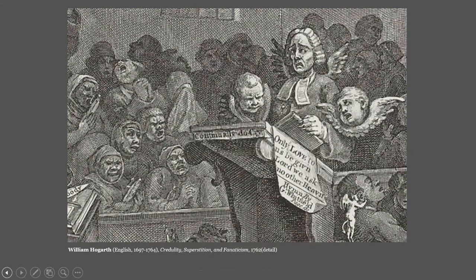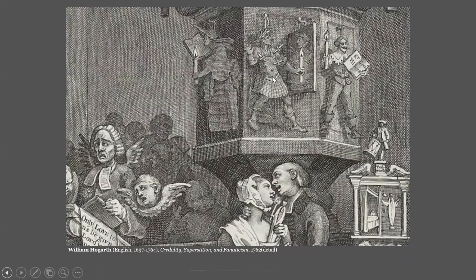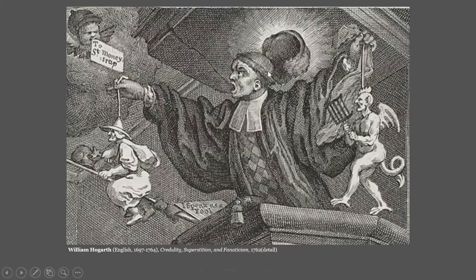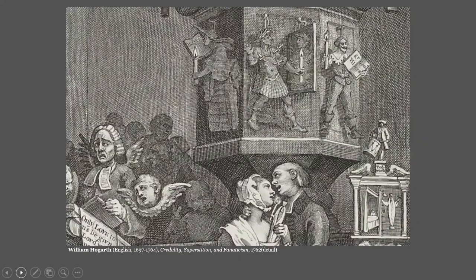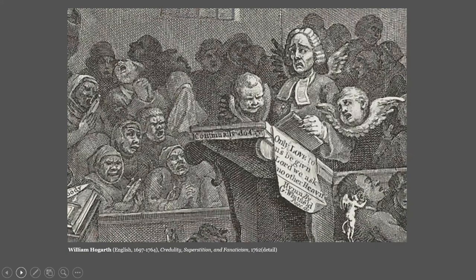Going back to the clergyman, his wig flies off to reveal a Catholic tonsure. So even though they claim to be Protestant, the Methodists are just as superstitious as the Catholics — getting a poke in at Catholicism as well. The inclusion of the Boy of Bilston is also a jab at Catholicism, since his possession was championed as true by English Jesuits. There is also an element in this engraving that suggests, in true Hogarth fashion, that he was poking at Christianity as a whole — not just Methodism, not just Catholicism, and not even just Anglicanism.